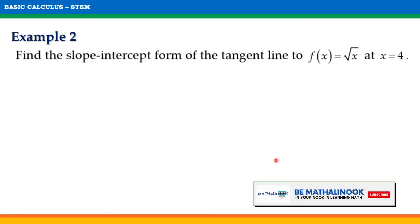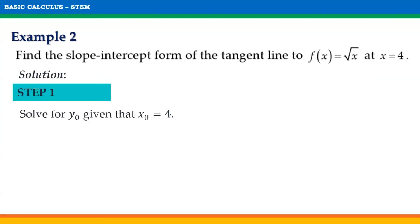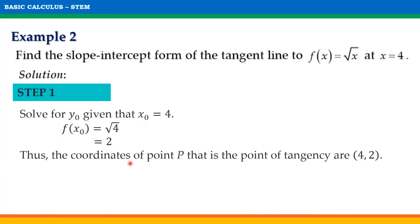Let us take another example. Find the slope-intercept form of the tangent line to f of x equals square root of x at x equals 4. Let us solve for y sub 0 given that x sub 0 equals 4. Substituting 4 into the function, f of x sub 0 equals square root of 4 equals 2. Therefore, the coordinates of point P, the point of tangency, are (4, 2), which will serve as our x sub 0 and y sub 0.